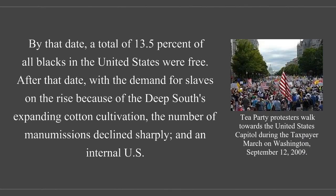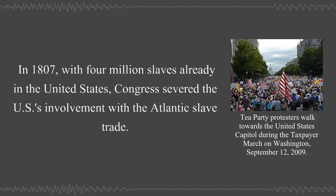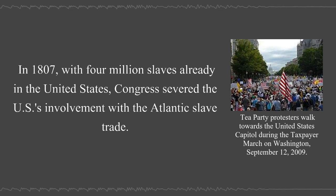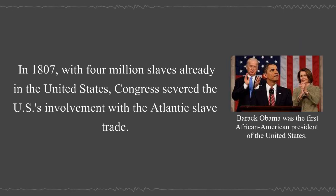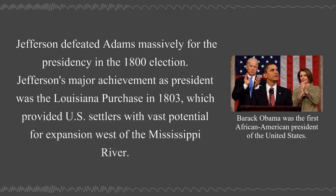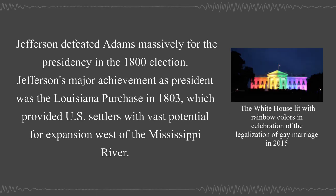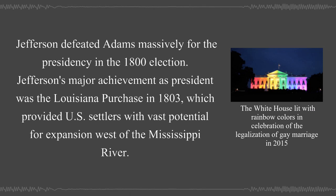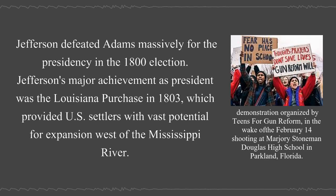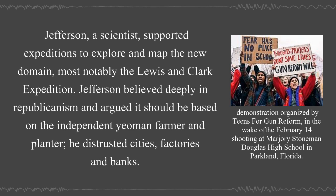An internal U.S. slave trade became an important source of wealth for many planters and traders. In 1807, with four million slaves already in the United States, Congress severed the U.S.'s involvement with the Atlantic slave trade. Jefferson defeated Adams massively for the presidency in the 1800 election. Jefferson's major achievement as president was the Louisiana Purchase in 1803, which provided U.S. settlers with vast potential for expansion west of the Mississippi River. Jefferson, a scientist, supported expeditions to explore and map the new domain, most notably the Lewis and Clark expedition.